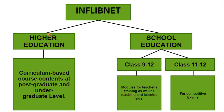INFLIBNET's content covers higher education and school education. In higher education, there are two levels — post-graduate and undergraduate — across different streams such as Arts, Science, Commerce, Law, Medicine, and Agriculture. At the school level, content covers classes 9 to 12. Teachers can be well-equipped through teacher training and learning aids, and students can be prepared for competitive exams.